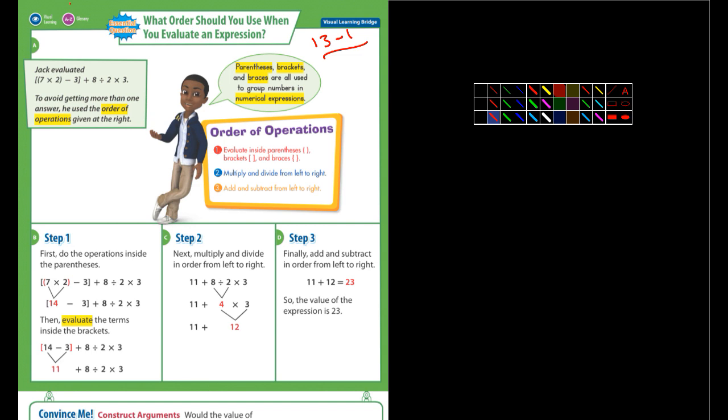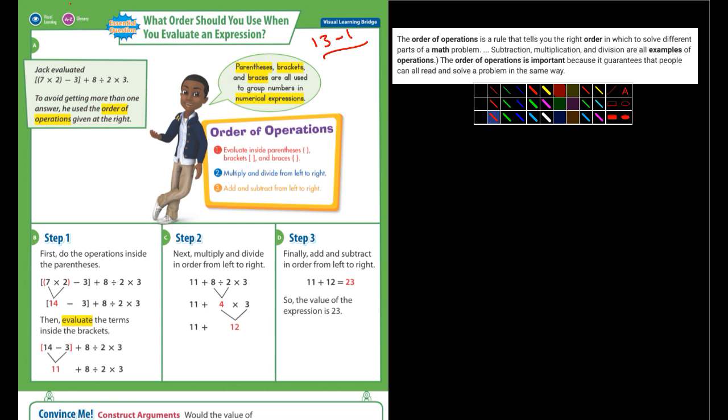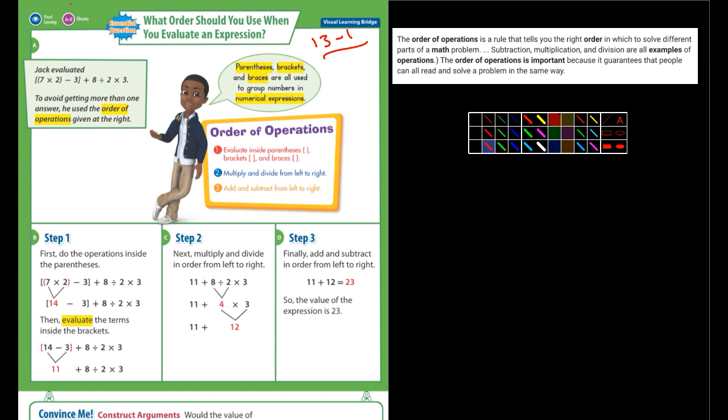I came up with a definition. I found one that I thought was pretty straightforward. It says the order of operations is a rule that tells you the right order in which to solve different parts of a math problem. Subtraction, multiplication, division are all examples of operations. The order of operations is important because it guarantees that people can all read and solve the problem in the same way. In other words, if we didn't use order of operations, we would get different answers for the same problem, and then nobody would agree, and that would be a mess.